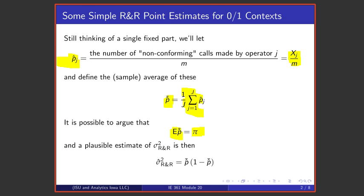In addition to that, remembering that pi times 1 minus pi is what we were going to call sigma squared R&R in this context, it's then plausible that instead of pi times 1 minus pi, one takes the data-based p hat bar times 1 minus p hat bar and uses that as an estimate of sigma squared R&R.